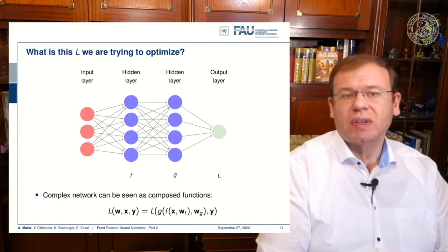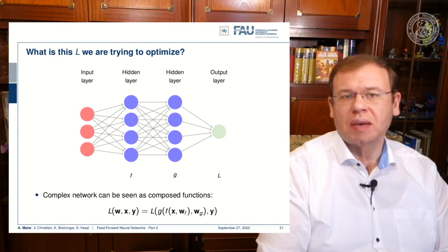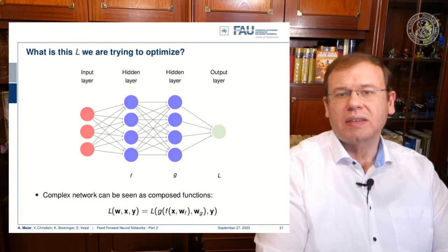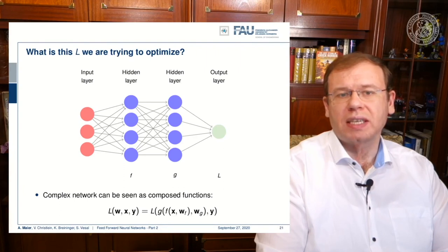So you could say if the first layer is f, the second is g, we are interested in computing L of some input x and w. We compute f using w subscript f, then we use the weights w subscript g to compute g, and then in the end we compute the fit between g and y.